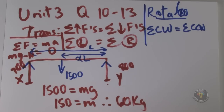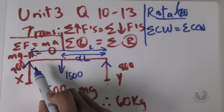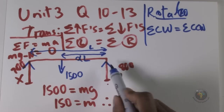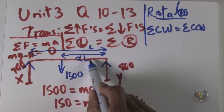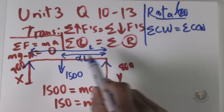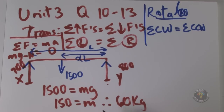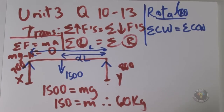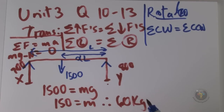Ideally, you choose a pivot point that removes an unknown value or one from which you are already measuring. Since we're measuring from y, I'll choose y as the pivot. Importantly, any force applied at the pivot point produces zero torque.